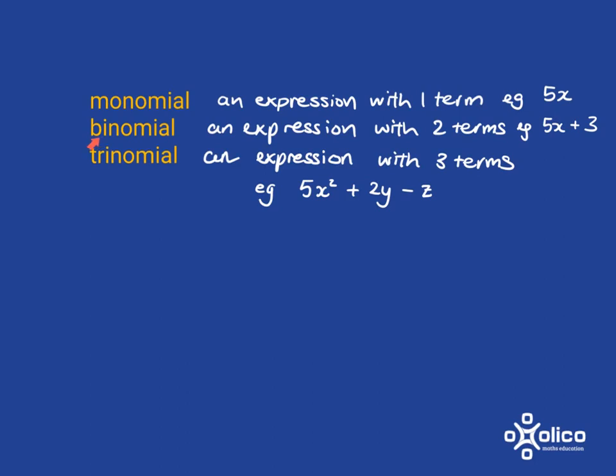A binomial, bi, like in bicycle, means 2. It's an expression with 2 terms. So here we've got 5x plus 3, that's 1, 2 terms.